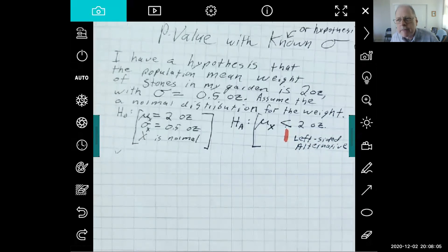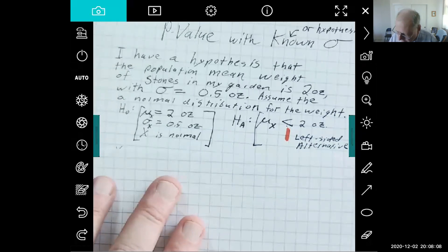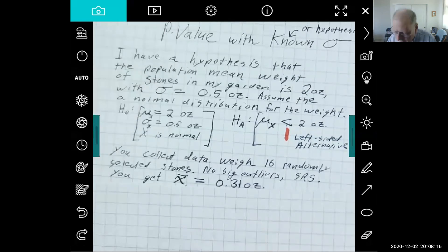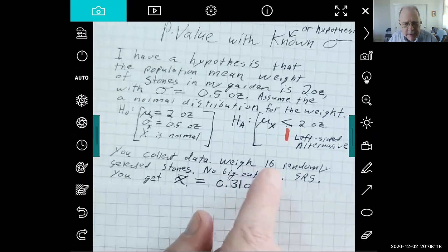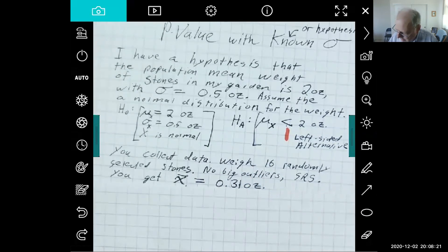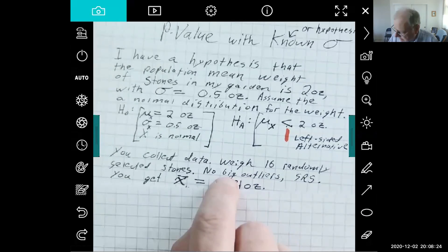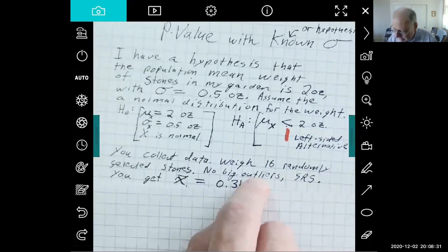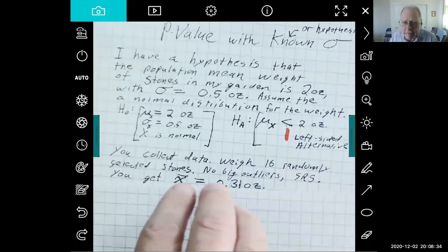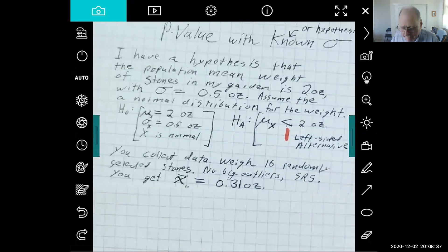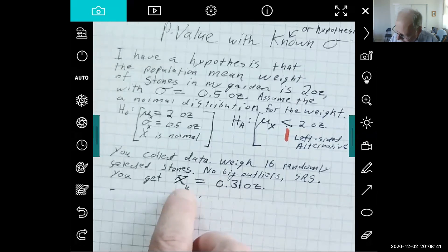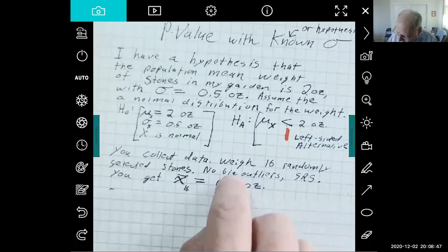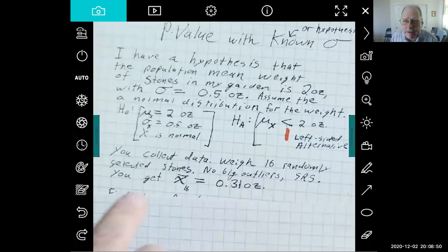Now you go out and you collect some data to try to challenge my hypothesis because you think I'm wrong. You collect data, you weigh 16 randomly selected stones, you look at them, you see there's no big outliers. Okay, that big boulder in the corner of my garden didn't happen to get in there, so it was a simple random sample, so you think it's probably representative of the population. You get the sample mean, the average weight of your 16 stones, and you get 0.31 ounces. And you say, well look, that's a lot smaller. You say the mean's 2 ounces; I get a sample mean that's much smaller than that.